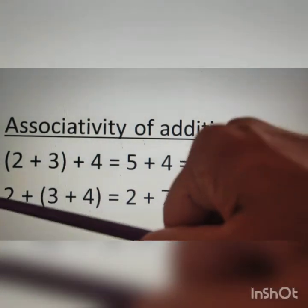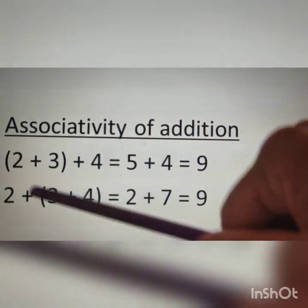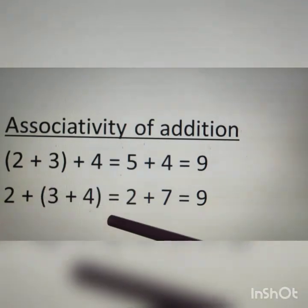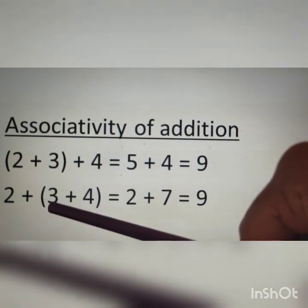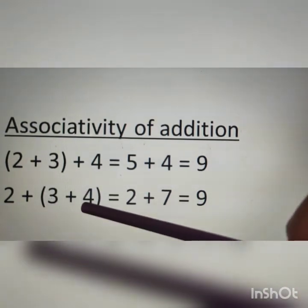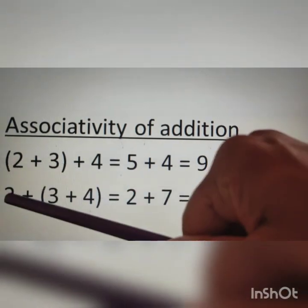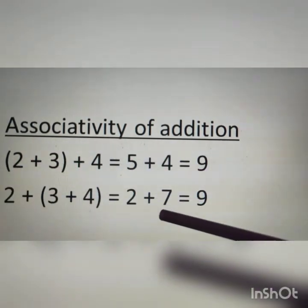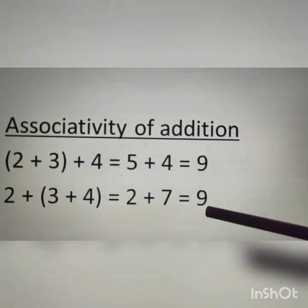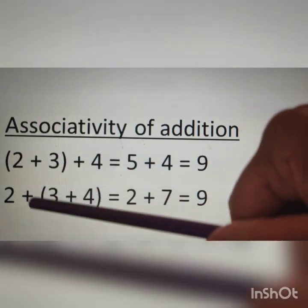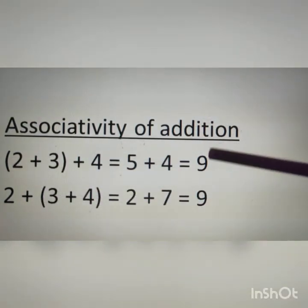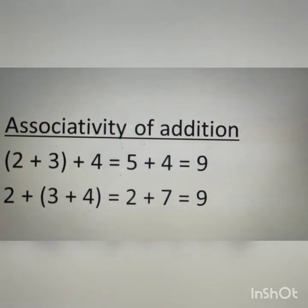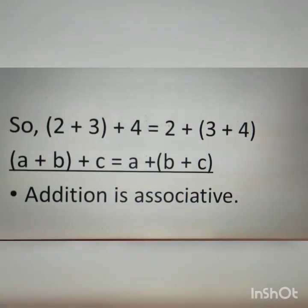In the next line, the numbers are the same but only the brackets are interchanged. The numbers in the bracket are 3 plus 4, which equals 7. Therefore 2 plus 7 is equal to 9. Even after the brackets are interchanged, the values remain the same.